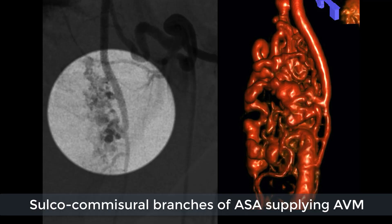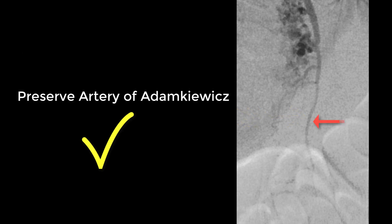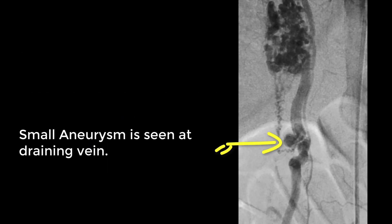Here we could see sulco-commissural branches of the anterior spinal artery supplying the AVM. The artery of Adamkiewicz is supplying normal cord parenchyma distal to the AVM. We must preserve this artery if we plan for any treatment. One could also see a small aneurysm at the draining vein, which could increase the risk of bleeding in the future.